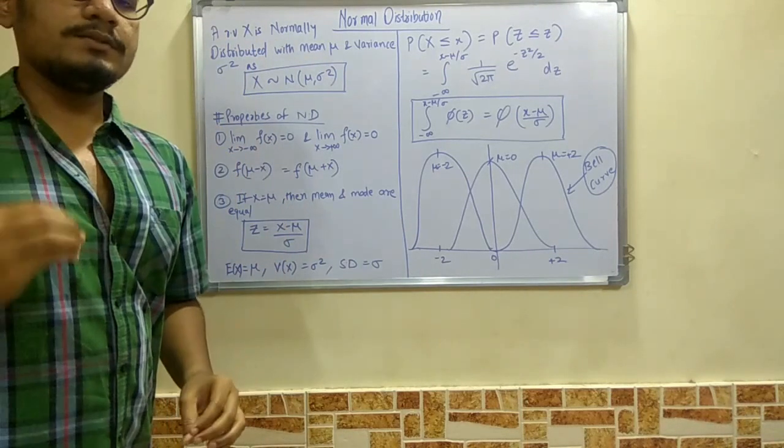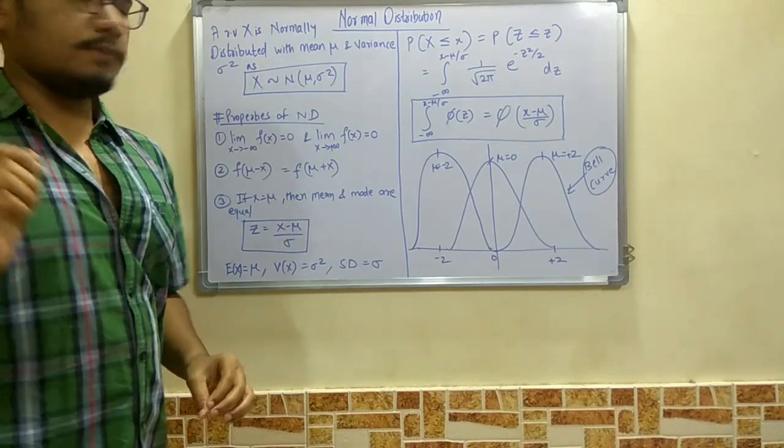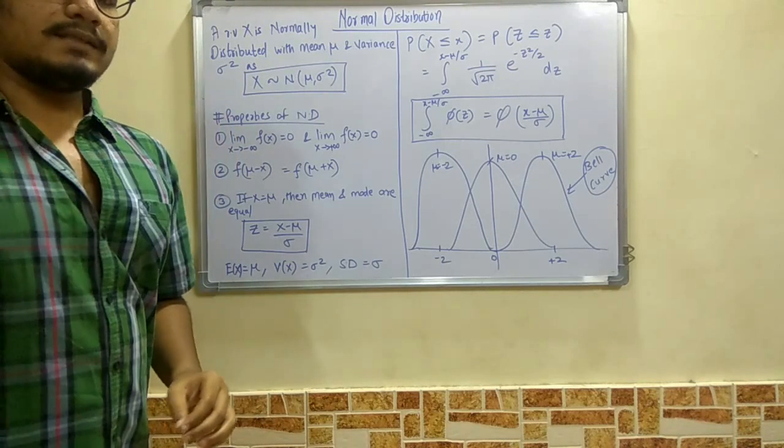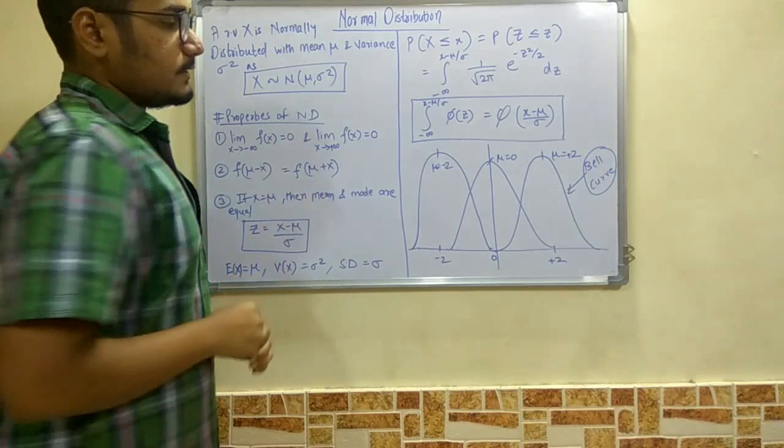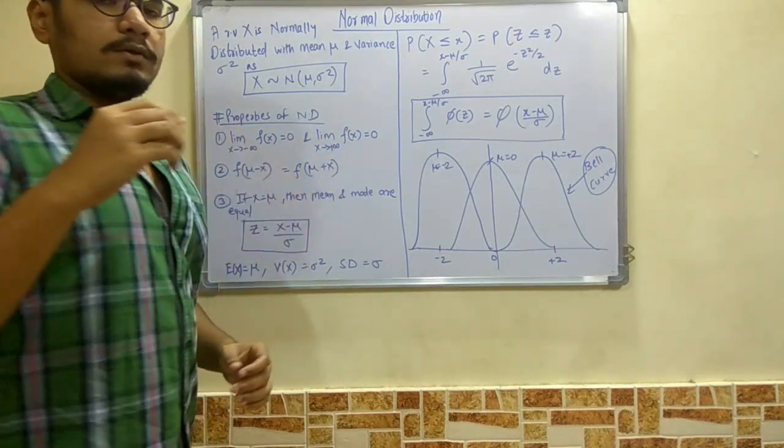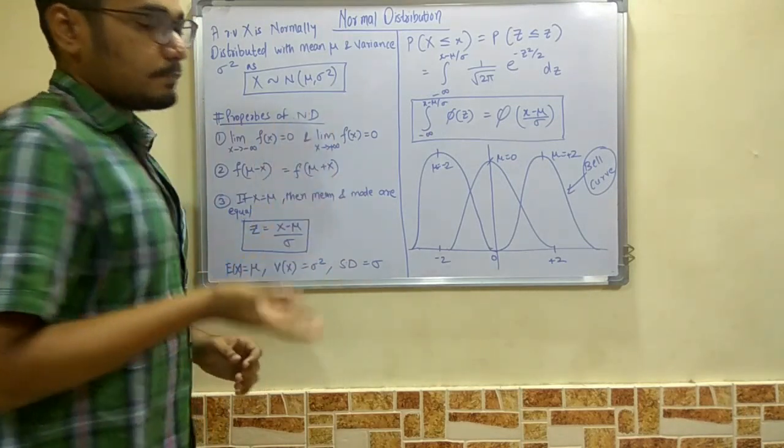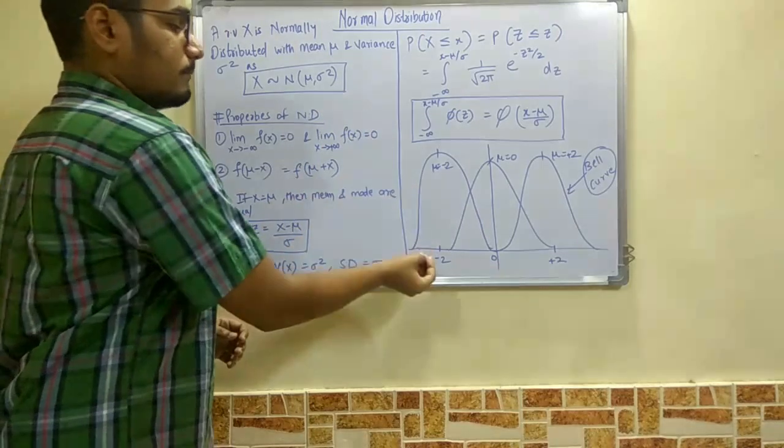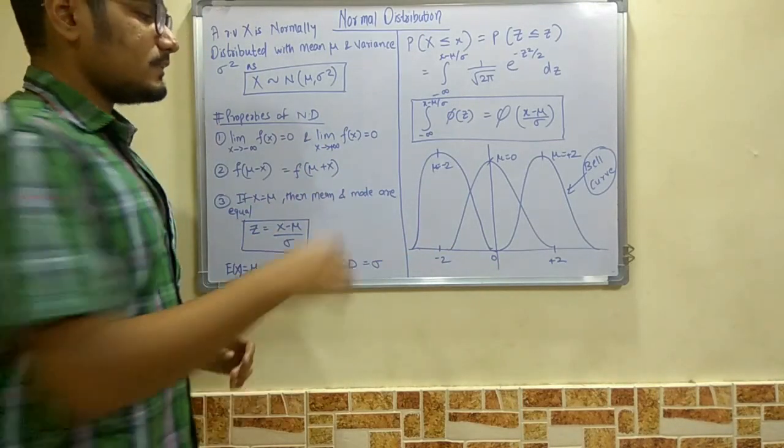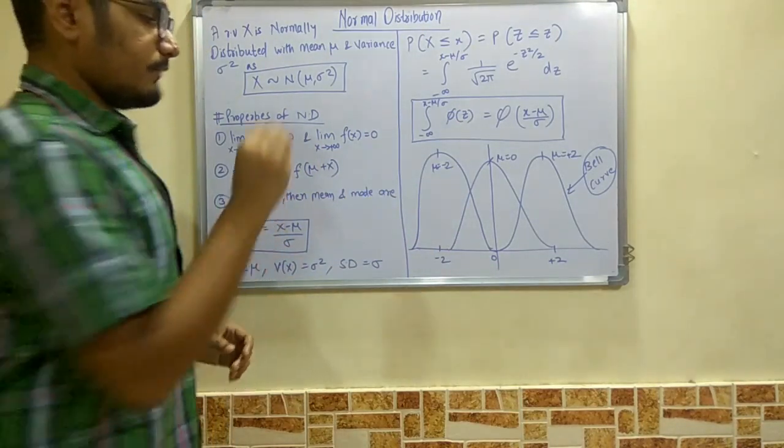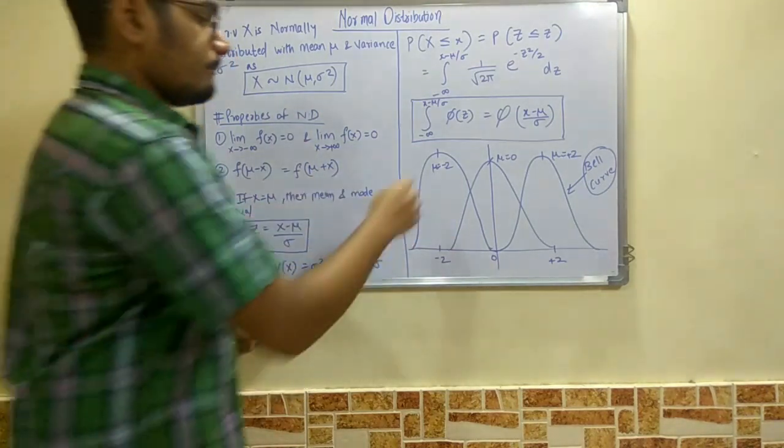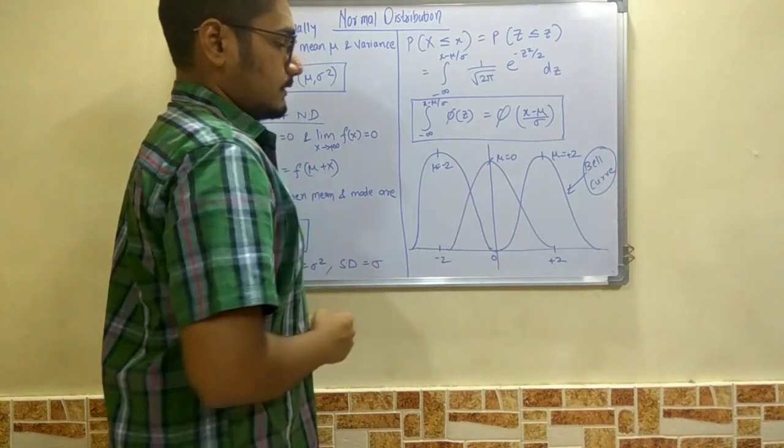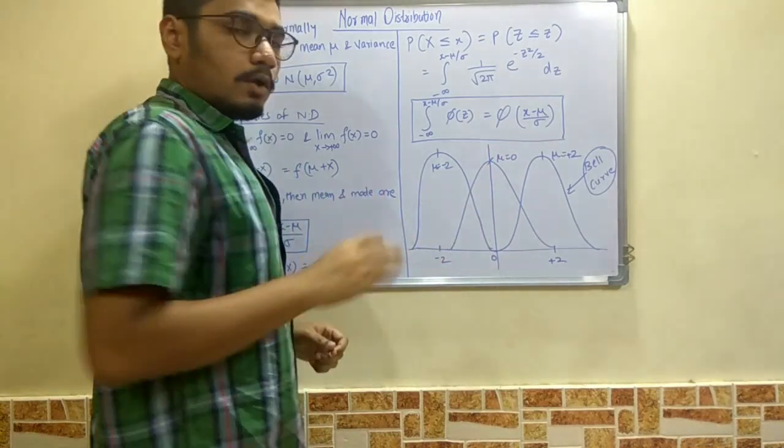Now, since the triangular distribution followed a triangular-shaped curve, this normal distribution has a bell-shaped curve. This bell-shaped curve extends along the positive x-axis as well as negative x-axis and along the center. So if μ = 0, it will be like this—a bell-shaped curve.